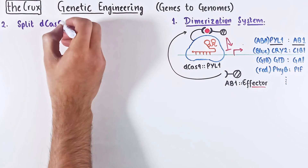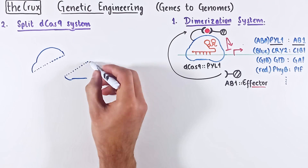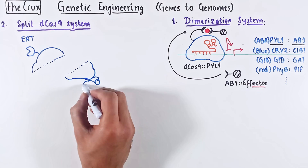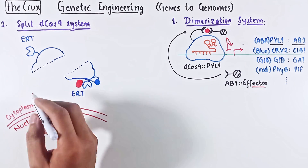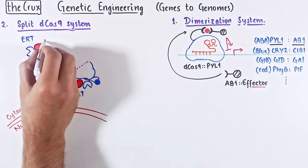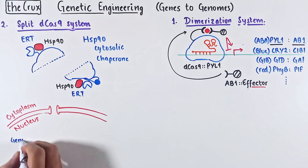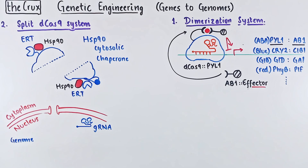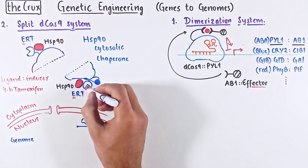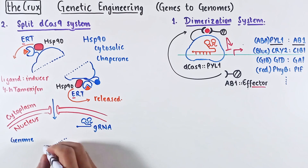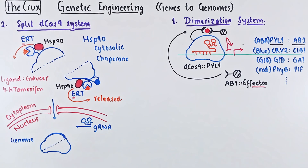Another way to control timing is to split the dCas9 protein into two pieces. On each split piece, you tag an estrogen receptor ligand-sensitive domain (ERT), with one side additionally carrying an effector. Without the ligand, the ERT interacts with HSP90, a cytosolic chaperone, keeping the split dCas9 in the cytoplasm by default. To activate nuclear import, you use an inducer — estrogen or an analog like 4-hydroxytamoxifen. The inducer binds ERT, weakening the HSP90 interaction so it releases dCas9, which is then shuttled into the nucleus where it reconstitutes to target the genome, and depending on the effector, you get your results.